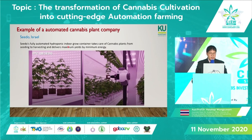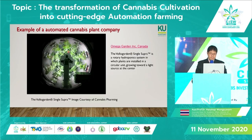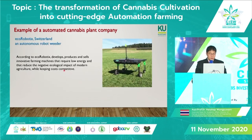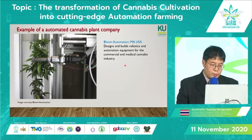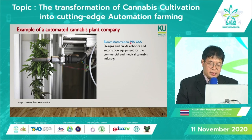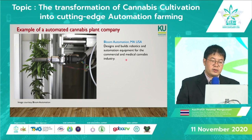Another company is Israel's Seadu, which offers a fully automated hydroponic indoor growing container. There is also Omega Garden in Canada, where plants are installed in a circular unit to save electricity costs. In Switzerland, they use an autonomous robot, as you can see in the picture.